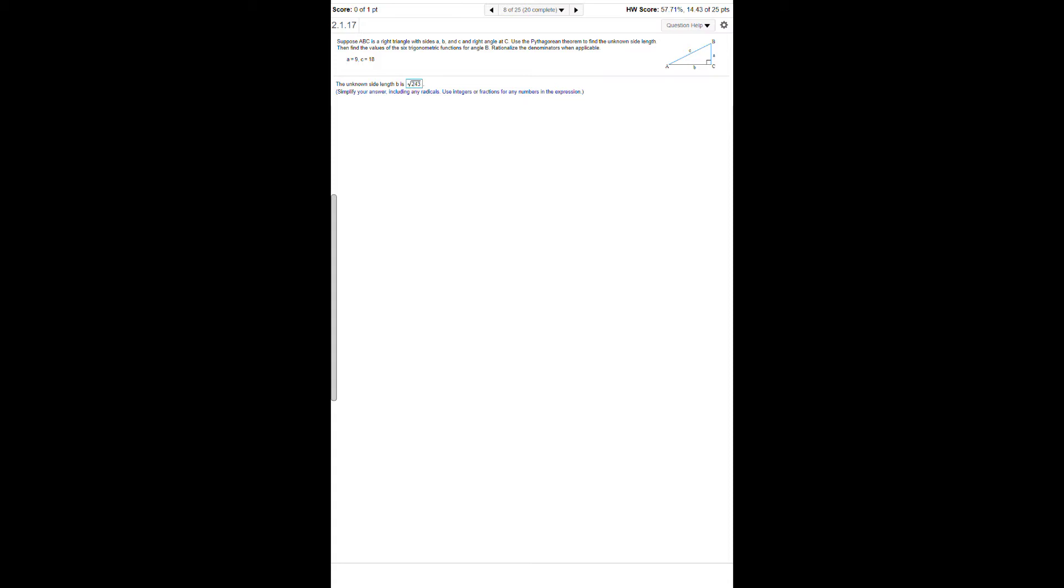We have the triangle at the top right with side A which is 9, and side C which is 18. That means we have to figure out what side B is. In order to do this, we use the Pythagorean theorem.